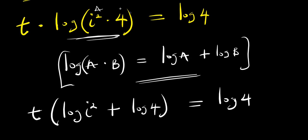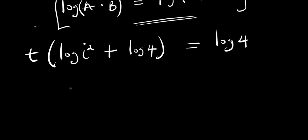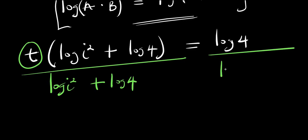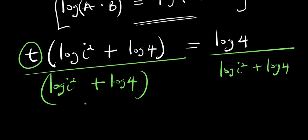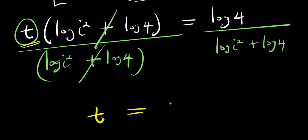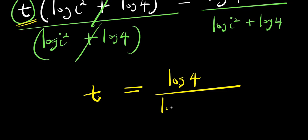So this is like our a and this is like our b. We are solving for t, so I can divide both sides by log i squared plus log 4. What happens is that those terms cancel, giving us t equals log 4 divided by log i squared plus log 4.